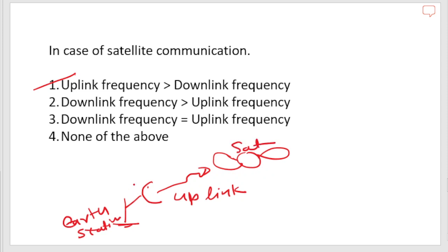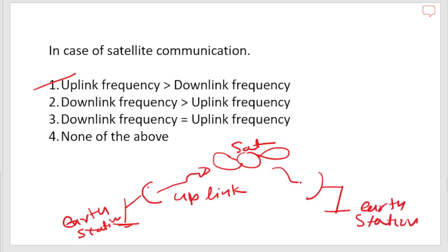The transmission of a signal from the satellite back to the earth station is called the downlink. When the signal comes back to the earth station, that is the downlink.